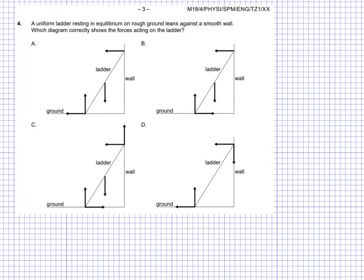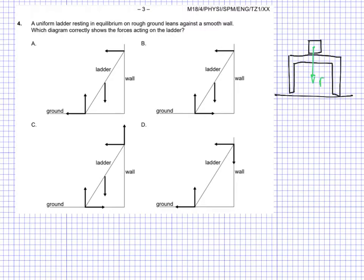I'll remind us of a very simple scenario — one we would have started with when doing forces and dynamics. When you have a table and you place an object on it — this is a side view of the table, here's the ground — assuming we're on planet Earth, we have a force: this is FG, the force of gravity, acting downward.